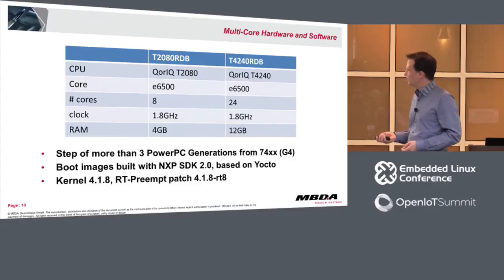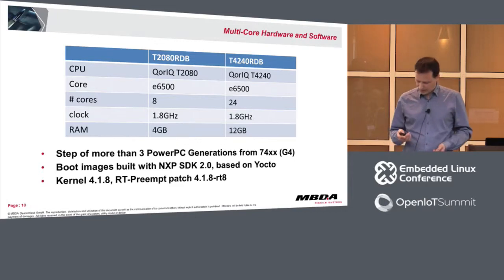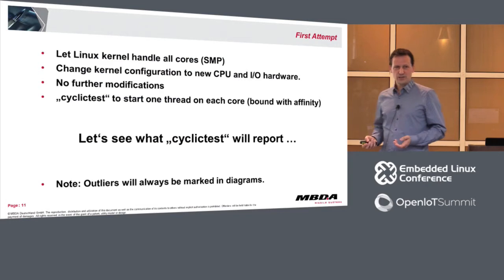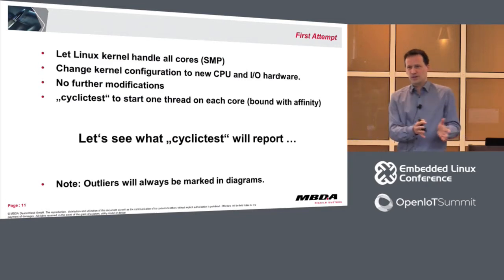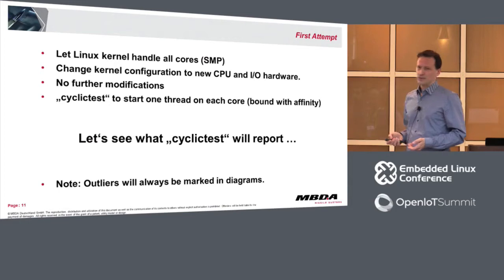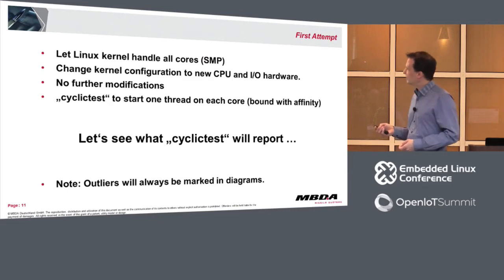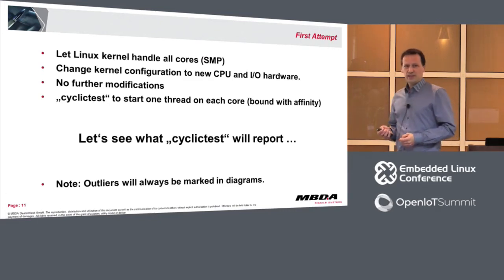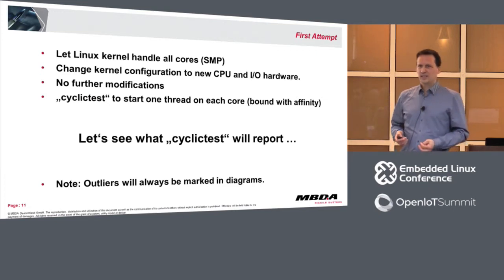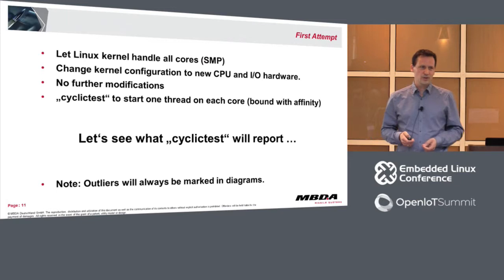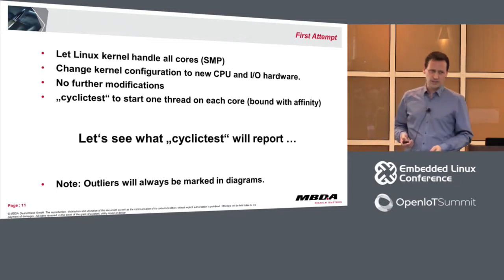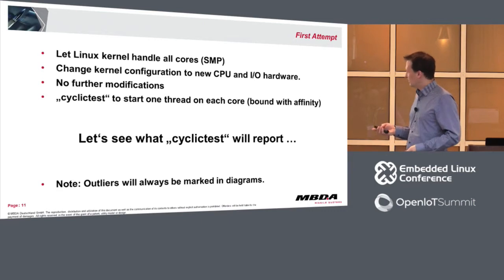The first attempt was to simply move the kernel to the new hardware. We let the kernel handle all cores, doing SMP configuration, and changed only a few kernel configurations for the new CPU core and different hardware. On the general setup we didn't change anything — just to see how it runs on the multicore software. Cyclic test is started with an additional parameter to run one thread on each core and bind the thread to the core using affinity. Let's see what cyclic test reports.